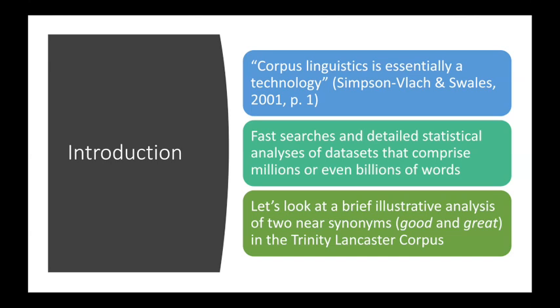As Jeff Leech rightly said, the one thing corpora allow us to do is derive frequencies from data, and that frequency information is relatively objective. That frequency information can only be derived because we can do fast searches of very large volumes of data and carry out complex statistical analyses. In principle we can do the same by hand, but the scale we can achieve nowadays — where almost everybody has studied millions or billions of words — is something that very few people in the past ever did, typically only with culturally important texts like the Bible or the Quran.